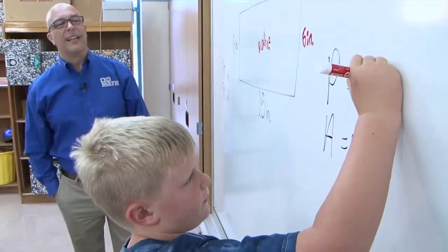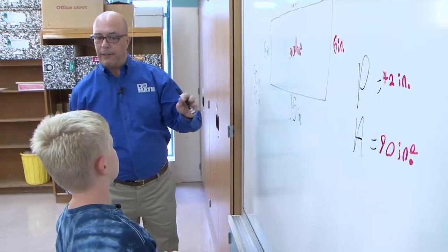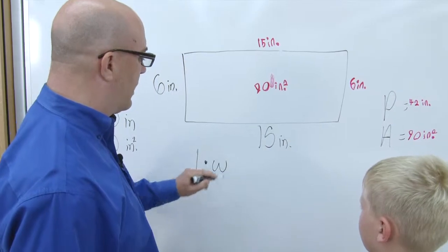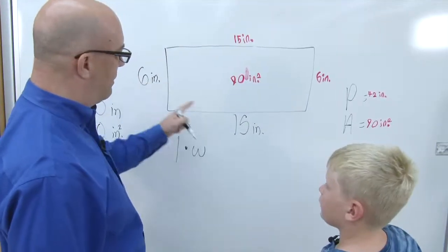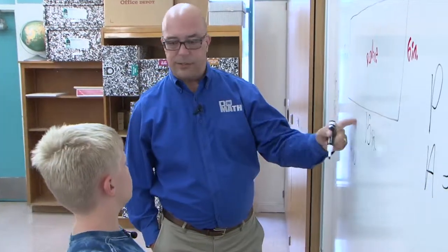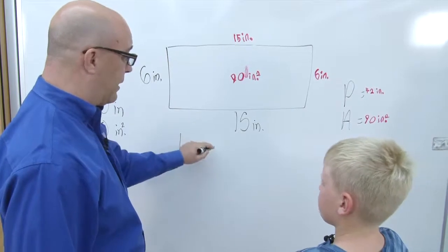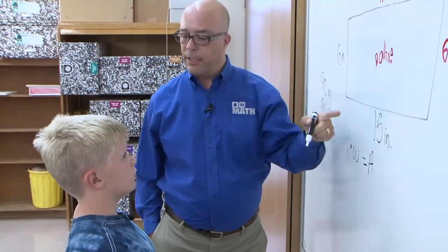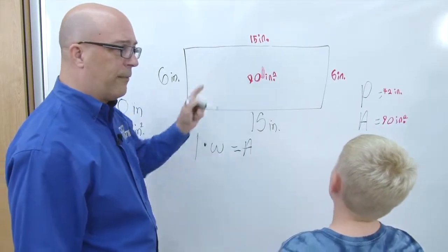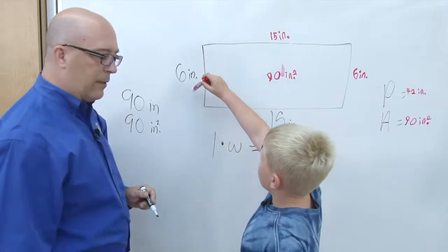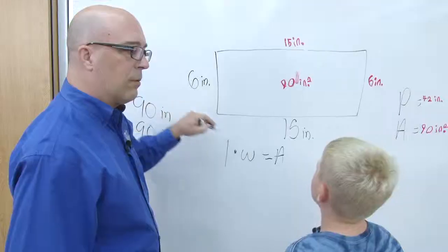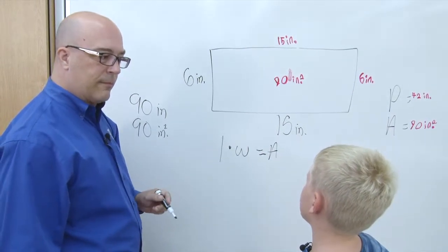So 42 inches. Have you ever seen formulas for figuring out perimeter and area? No. If we did length times width, isn't that what you did here? And what did that give us? 90 inches squared, that gave us the area, didn't it? Yeah. Okay, so length times width would be the area. Do you think you could come up with a formula so that we could figure out how to do the perimeter? What operation did you do? I added, because for the perimeter it's adding, for the area it's times.